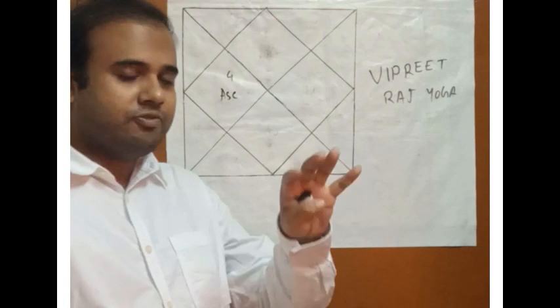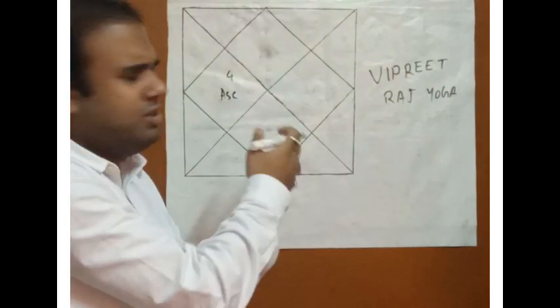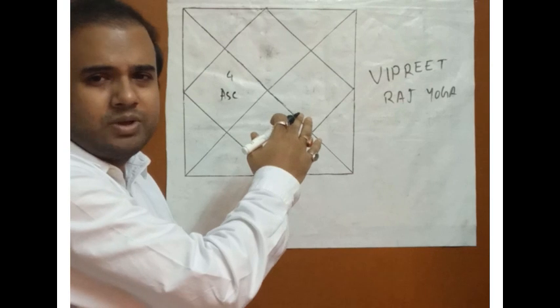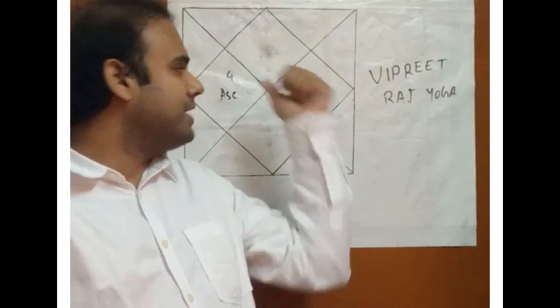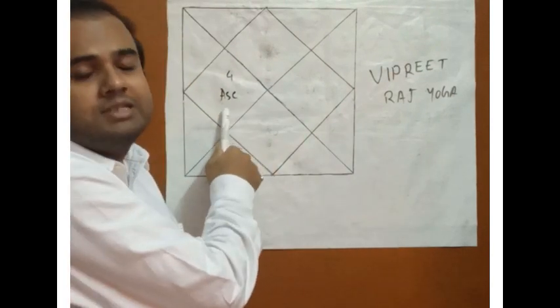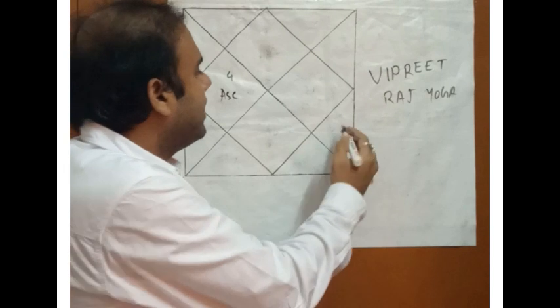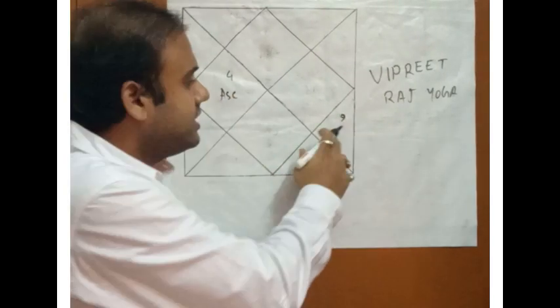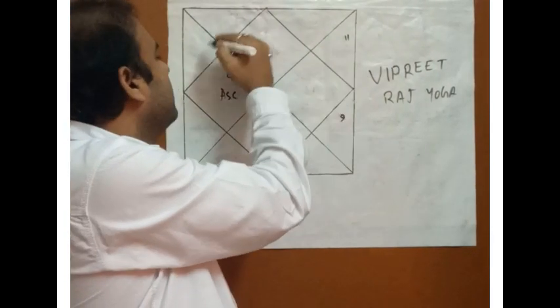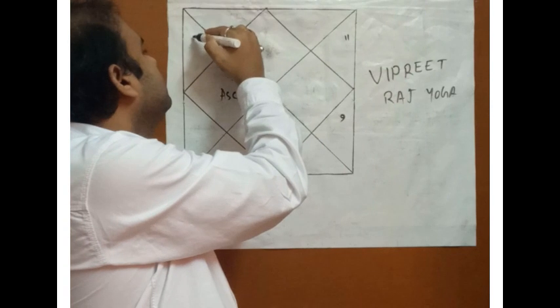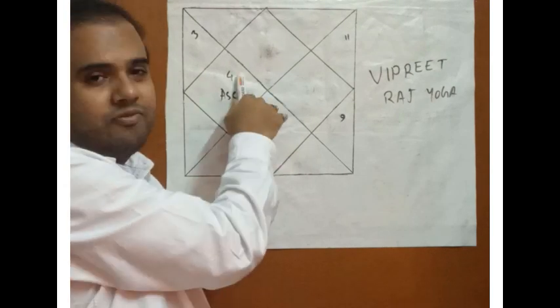Now, how this yoga happens? We are discussing Vipreet Raj Yoga. You must be thinking that if it is Vipreet or opposite, it is not good. Vipreet means not good, it is not normal Raj Yoga. So how can this Raj Yoga do good to a particular person? Now open your horoscope. Suppose this is your ascendant, any house. Just for the sake of your understanding, I generally show you in Kalkurush Kundali.